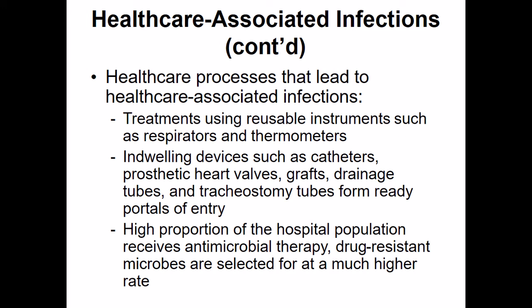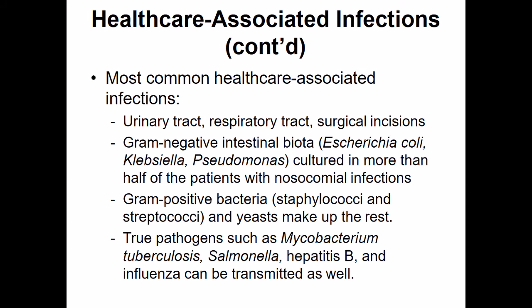In a hospital setting, many patients are going to receive antibiotic treatments, so there's an increased risk of antibiotic-resistant bacteria compared to the general population. The most common healthcare-associated infections occur at UTI, respiratory tract, and surgical incision sites. The bacteria that cause most nosocomial infections are gram-negative intestinal bacteria — which include E. coli, Klebsiella, and Pseudomonas — found in over 50% of nosocomial infections. Gram-positive bacteria, particularly Staphylococci and Streptococci, and the fungus Candida, or yeast, make up the other portion.